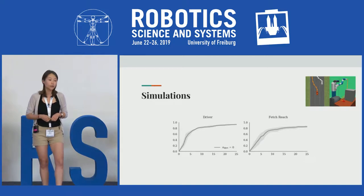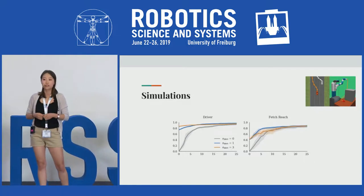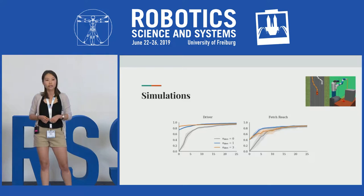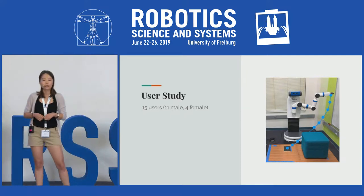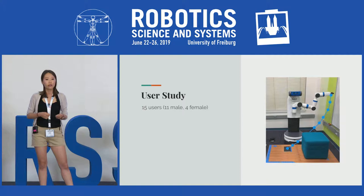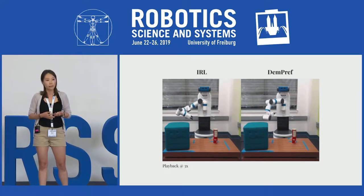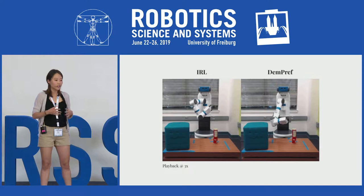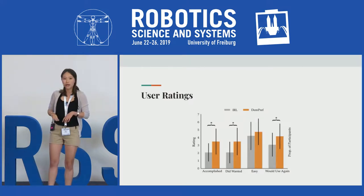To validate our hypothesis, we ran simulations on the driving and manipulation domains. As expected, warm starting preference-based learning with demonstrations significantly reduced the number of queries needed to learn the true reward function. We also ran a user study where users trained the robot using both IRL and our method, Dempref. The robot then optimized over the learned reward functions. The Dempref robot is successful at the task, whereas the IRL robot isn't — because the IRL robot overfits to demonstrations from users worried about collision avoidance. Users overwhelmingly chose Dempref when asked which system they preferred.